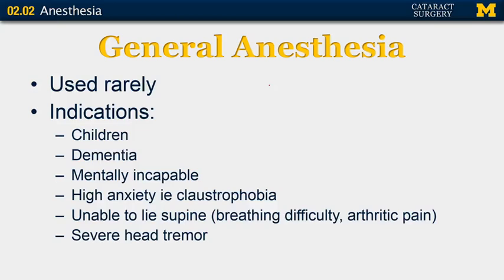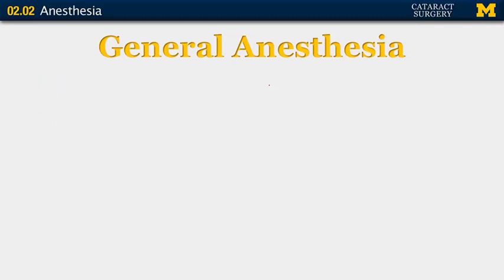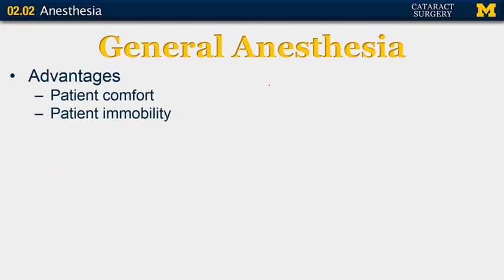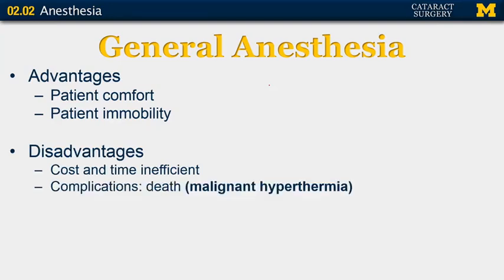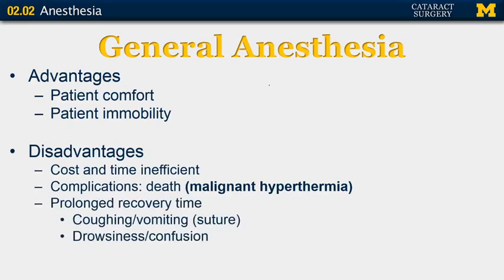First, we will discuss general anesthesia. This is used very rarely in cataract surgery. Indications include children, patients with dementia, patients who are mentally incapable or have high anxiety such as claustrophobia, patients who are unable to lie supine due to breathing difficulty or arthritic pain, and those with a severe head tremor. The advantages are that it provides 100% patient comfort and immobility. The disadvantages are greater cost and time, potential serious complications such as death and malignant hyperthermia, and a prolonged recovery time during which coughing and vomiting may risk wound dehiscence, or drowsiness and confusion.